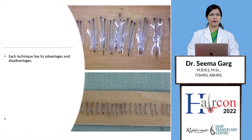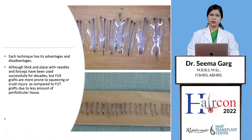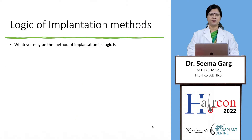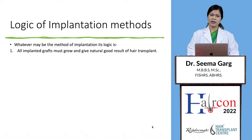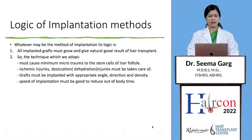Each technique has its advantages and disadvantages. Though the stick-and-place technique with needle and forceps has been used for decades, FUE grafts are more prone to crush injury compared to FUT grafts due to less perifollicular tissue. The logic of implantation methods is that whatever method is used, all implanted grafts must grow and give a natural result. The technique adopted must cause minimum micro-trauma to the stem cells, ischemic injury and desiccation injury must be avoided, grafts must be implanted with appropriate angle, direction, and density, and speed of implantation must be good to reduce out-of-body time.